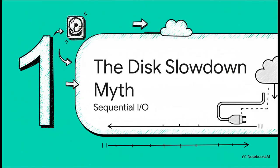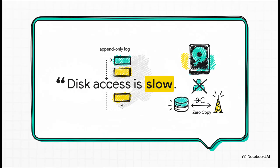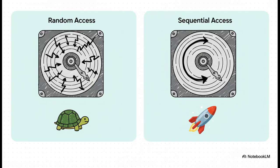To understand how Kafka gets this incredible throughput, we have to start in a place that probably sounds completely wrong. The hard disk. Yeah, the slow spinning hard disk. This is where we find Kafka's first big secret weapon. It's total and complete reliance on something called sequential IO. Now you've probably had this drilled into your head. Disk access is slow. It's like rule number one of performance engineering. But what if that's not the whole story? What if it's kind of a myth? Kafka's design takes that common wisdom and just flips it on its head.